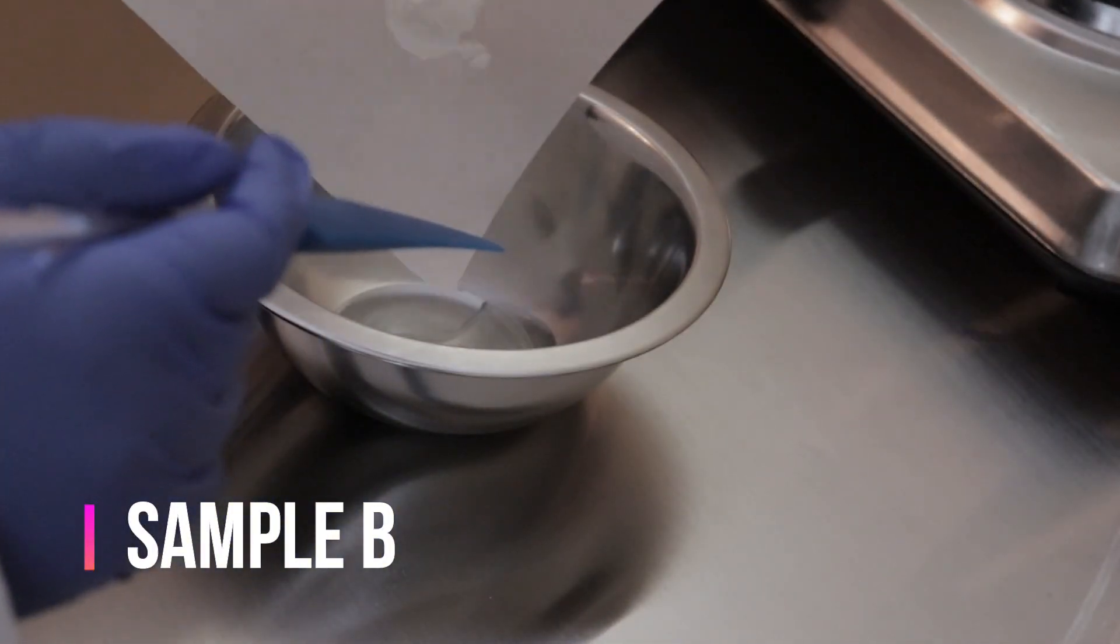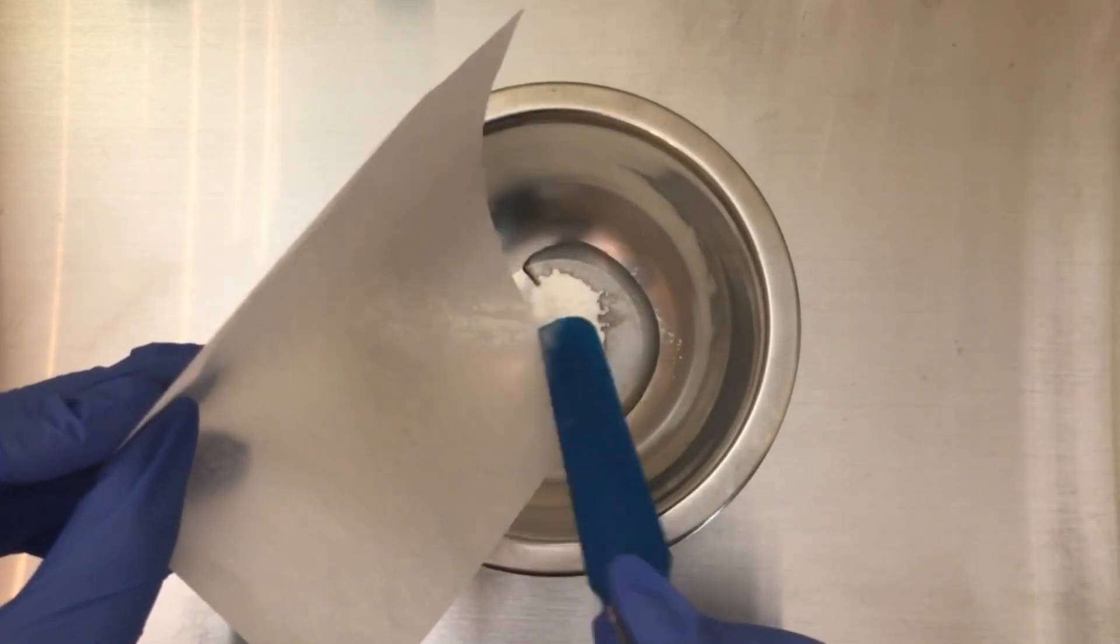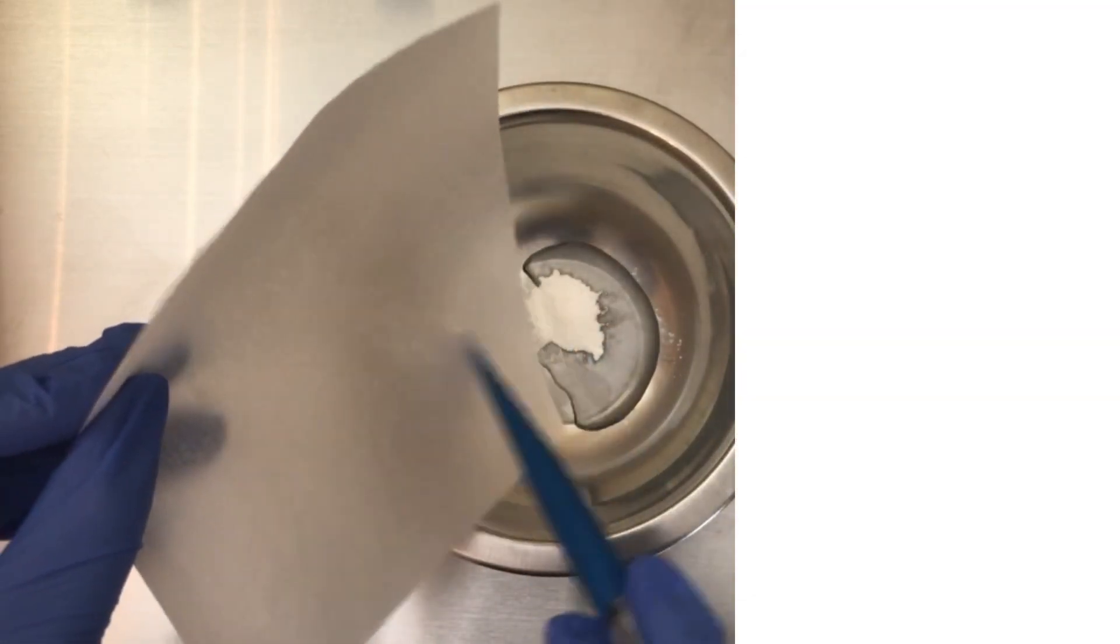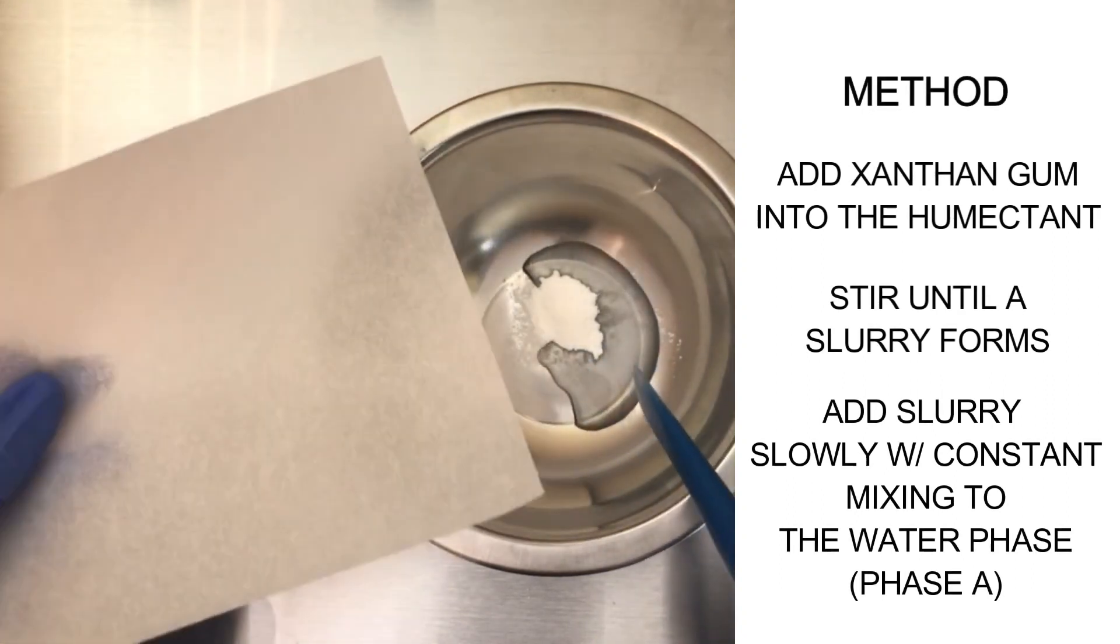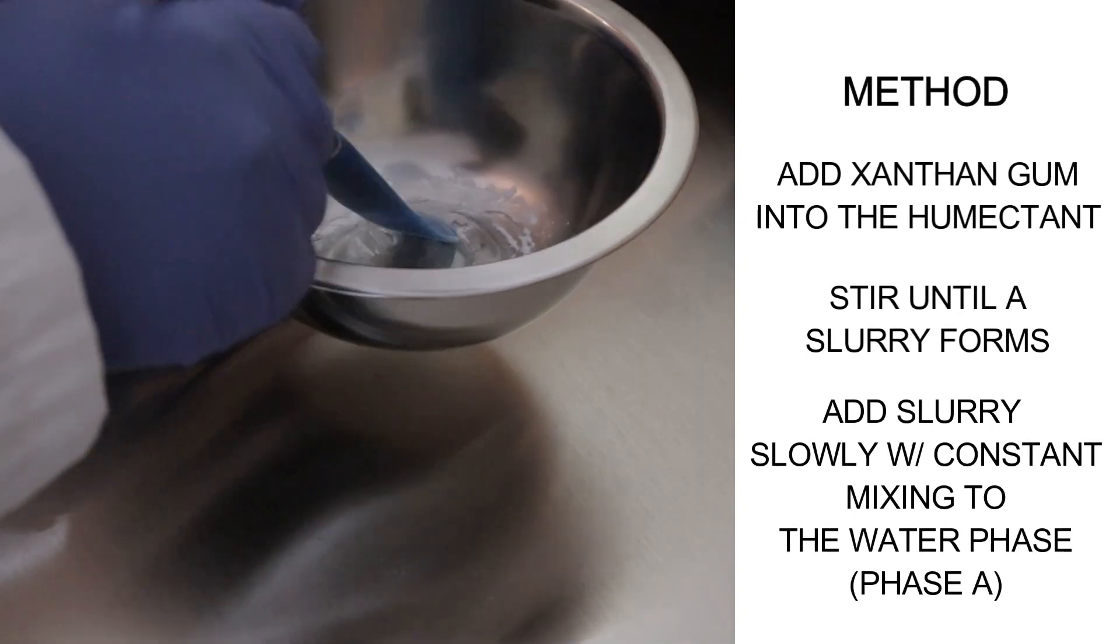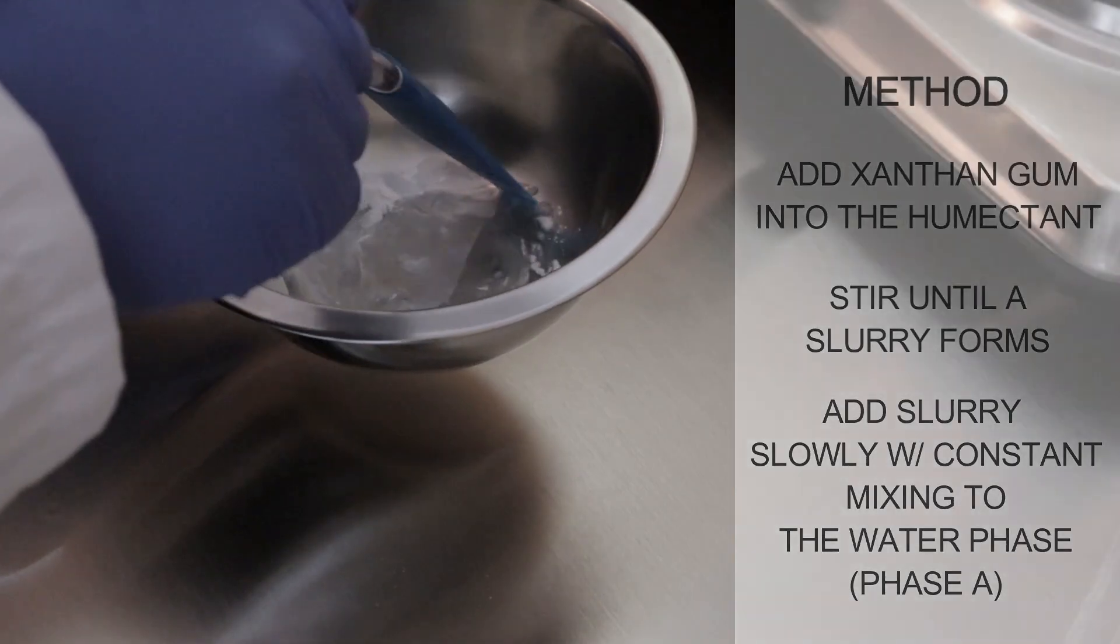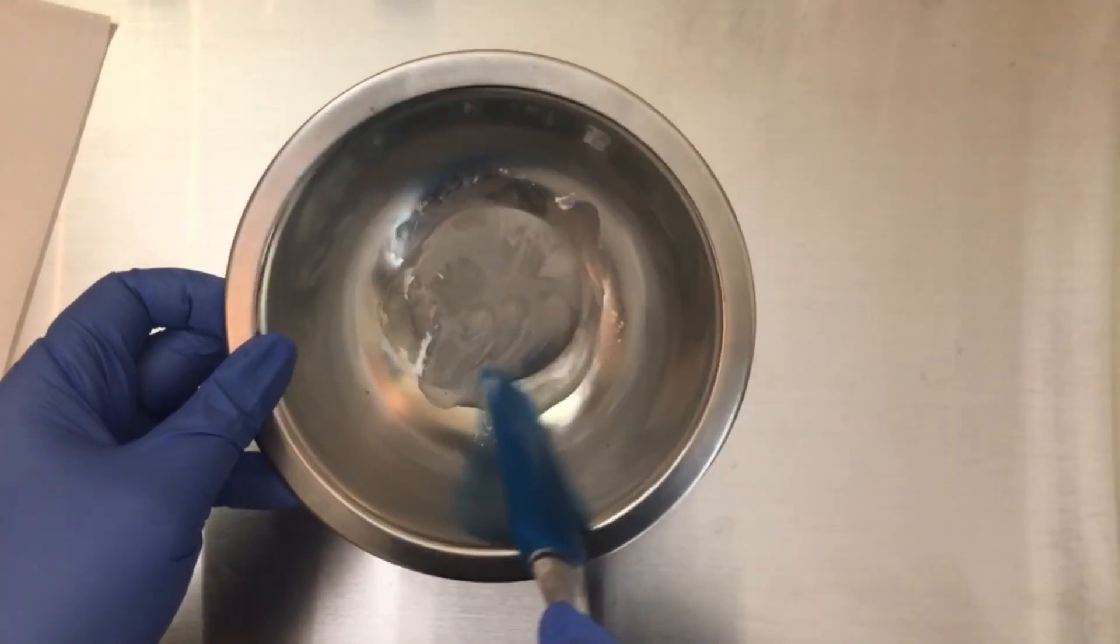Okay, so now we're going to start on sample B. Again, we're going to add the xanthan gum into the glycerin first to form our slurry. And then what we'll do differently this time is slowly add phase B or the slurry into the water phase.